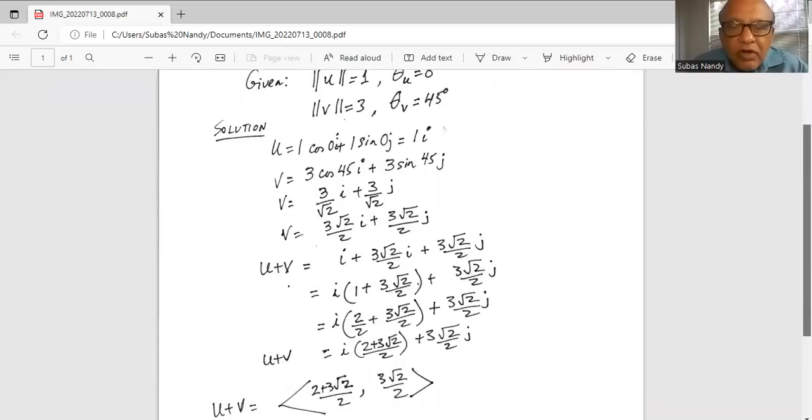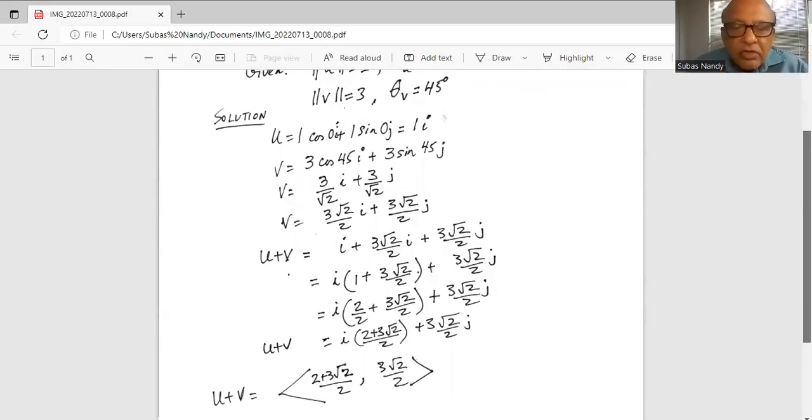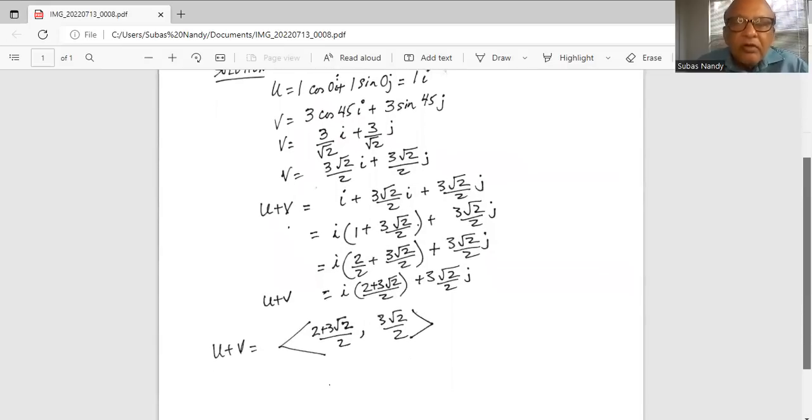Now 1 can be written as 2 divided by 2 in order to keep the common denominator the same as 2. So for the coefficient of i we get 2 plus 3 square root of 2 divided by 2, and the coefficient of j is 3 square root of 2 divided by 2. So the endpoints of the resultant vector u plus v are 2 plus 3 square root of 2 divided by 2 for the x, and for the y it is 3 square root of 2 divided by 2.